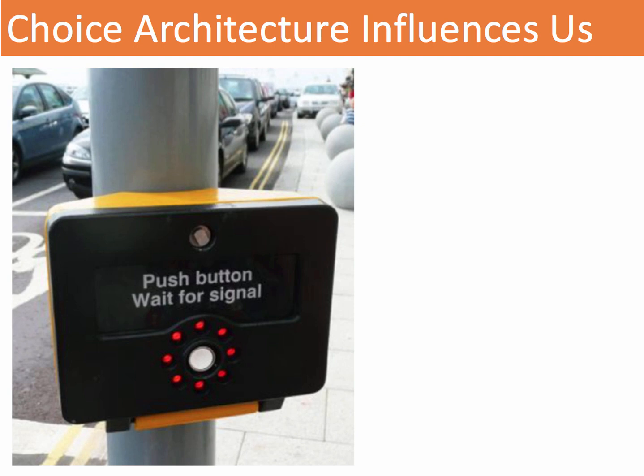In around half of the pedestrian crossings in this country, if you press the button and wait for the signal, it has no actual effect at all on the timing at which the lights change to allow you to cross the road. Half of pedestrian crossings now have cameras fixed on the road — they recognise when somebody is stood there and make an appropriate adjustment to the traffic. But giving people a button to press gives them a sense of self-control, and if they have pressed the button they're more likely to wait for the lights to change rather than take a gamble.